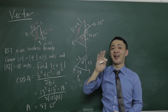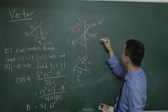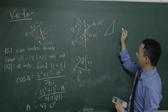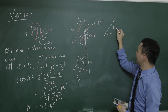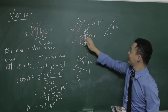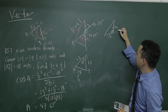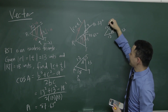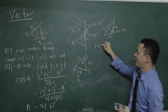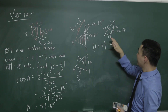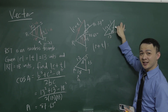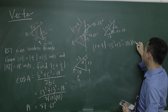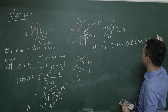Now I can get the length of R plus T by solving another triangle. I draw it out: this side is T = 13, this side is R = 13, and the included angle is 92.37 degrees. I want to find the opposite length, which is the magnitude of R plus T. Using the cosine rule: |R + T|² = 13² + 13² − 2(13)(13)·cos(92.37°), then I take the square root.